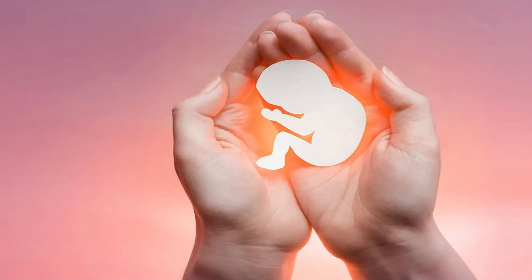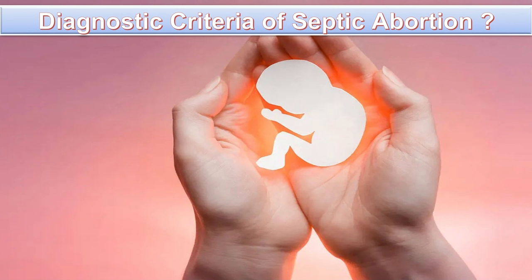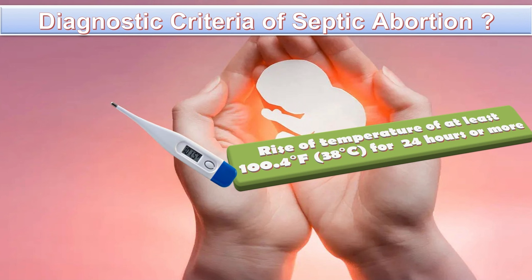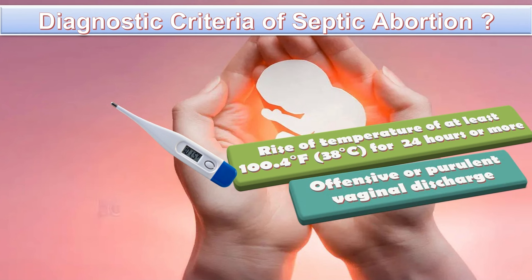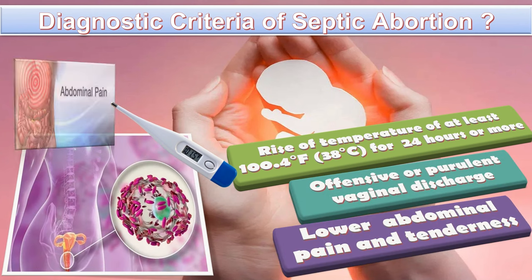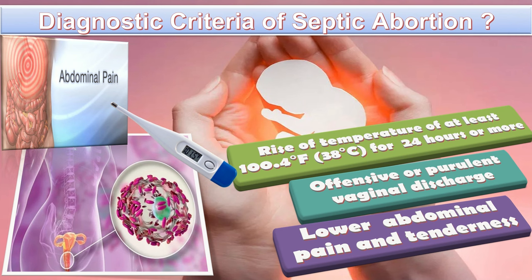The diagnostic criteria for septic abortion: abortion is usually considered septic if there is a rise in temperature of at least 100°F or 38°C for 24 hours or more, when there is offensive or purulent vaginal discharge, or when there are evidences of pelvic infection such as lower abdominal pain and tenderness.